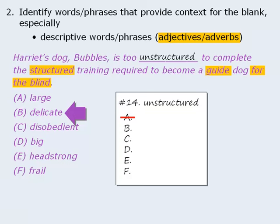What about answer choice B? Being delicate has nothing to do with completing structured training, so eliminate it. When we continue checking answer choices, the only two words that convey the same meaning as our prediction are 'disobedient' and 'headstrong.' A dog that is disobedient or headstrong would have a difficult time completing structured training. So answer choices C and E are the best answers. Are these the only words that would complete the sentence? No — however, they are the best words among our answer choices, and they are supported by the contextual clues in the sentence.